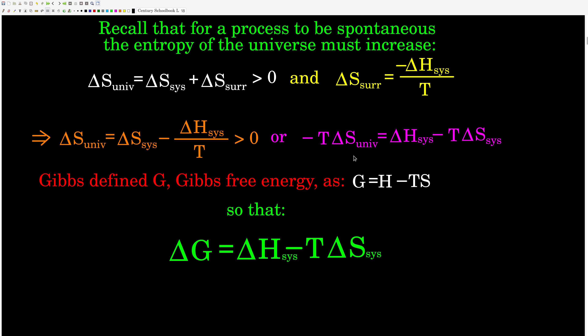The reason we did this is a man named Josiah Gibbs — a brilliant, brilliant guy — defined a function for us called Gibbs free energy. He defined this function G as being equal to H (enthalpy) minus temperature times entropy. This is a very, very nice definition. We see that if G equals H minus TS, then delta G equals delta H minus T delta S. We're going to assume isothermal and isobaric conditions — temperature doesn't change and pressure doesn't change. That's why temperature is not within the delta sign; it's constant. Delta G equals delta H minus T delta S. Very important equation, guys. Write that down. Memorize it. We use it quite a bit.